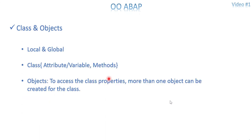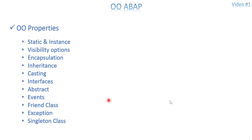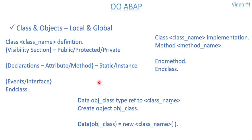Once the object is ready, you are able to access the particular property of the class. More than one object can also be created for a class — it's not limited to one, depending on the business scenario. The topics we are going to cover in this playlist include: static vs. instance, visibility options, encapsulation, inheritance, casting, interfaces, abstract, events, friend class, exceptions, and singleton class. There are more, but I'm trying to cover most of the object oriented properties.